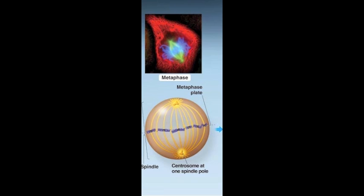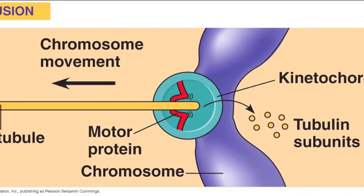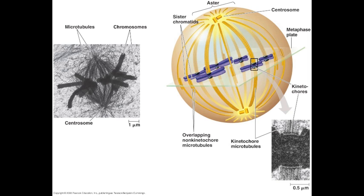In metaphase, the pulling of the kinetochore microtubules equalize so that the chromosomes are lined up at the metaphase plate, which is equidistant between the spindle poles.